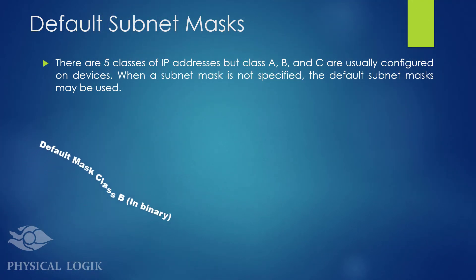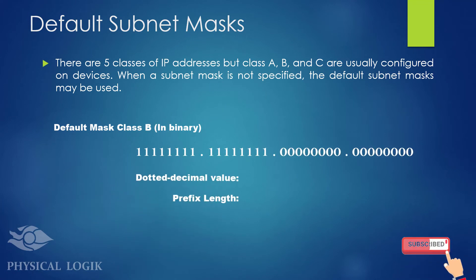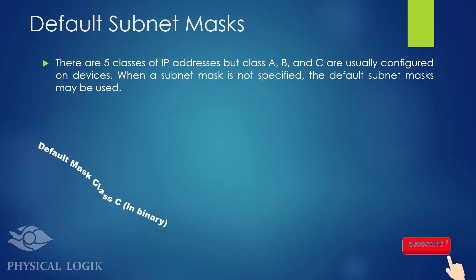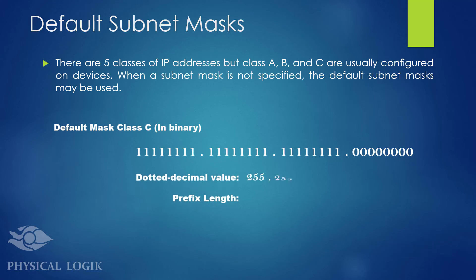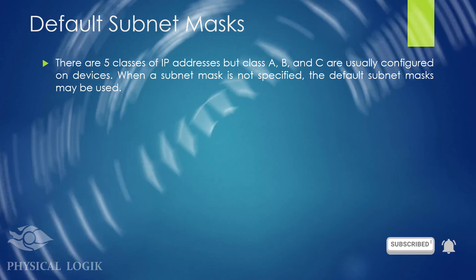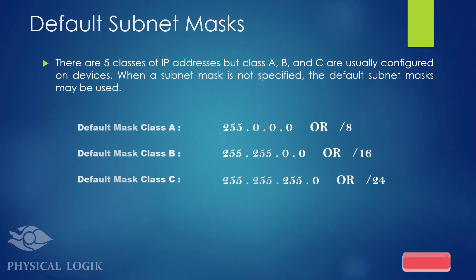Class B IP addresses have default masks consisting of 16 1s, which corresponds to the dotted decimal value of 255.255.0.0 or /16 prefix length. These are only their default subnet mask values, as the length may be shorter or longer for some application areas.